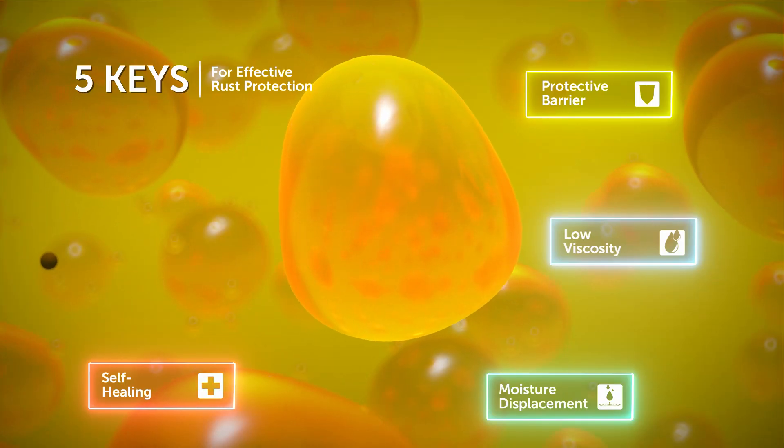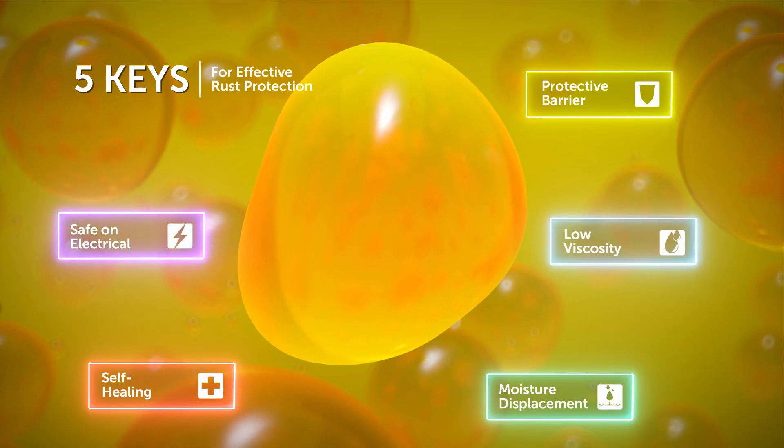And number five, and last but not least, some of the most costly repairs today on vehicles have to do with the electrical components. Therefore, an effective rust inhibitor product has to be able to be safely applied to these components without causing any sort of damage to them.